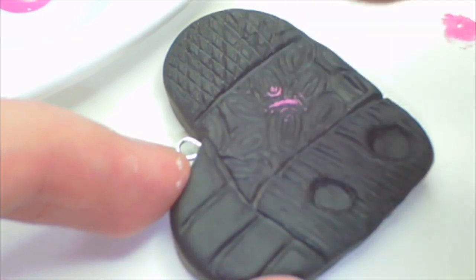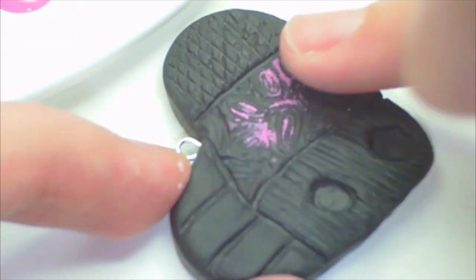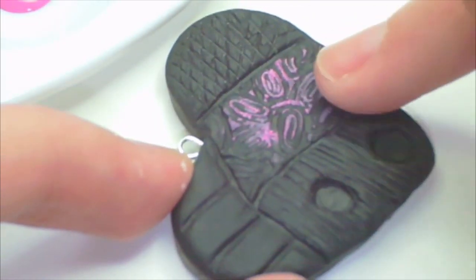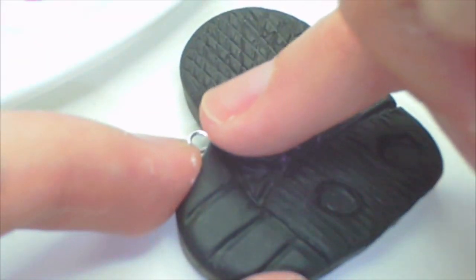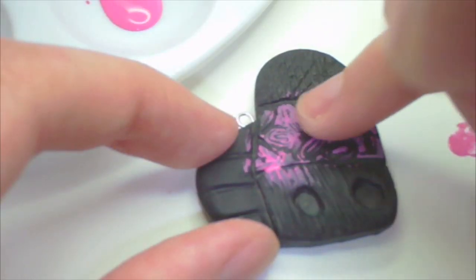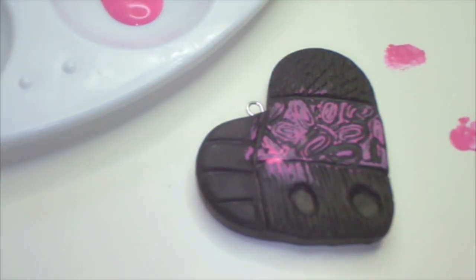Use the pink paint and paint the swirled section. I messed up a little bit, don't worry, you can cover that up with the other colors.